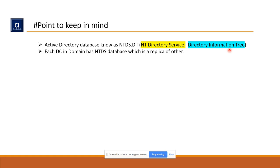Second point: each DC in a domain has an NTDS database which is a replica of the others. Keep in mind that all domain controllers have the same object information. If a user called User1 replicates to other DCs, the information remains the same — no changes in the object properties. Any changes made will replicate throughout all domain controllers.